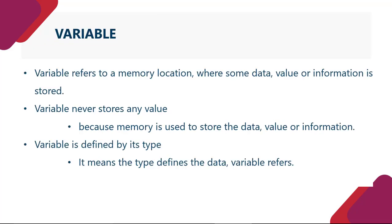Variable - variable kya hota hai? Variable refers to a memory location where some data, value or information is stored. Variable never stores any value. Some students in their definition say that variable is used to store the data - yeh galat hai, because memory is used to store the data, value or information. Variable is defined by its type. It means the type defines the data variable refers. Agar koi bhi variable hai, woh kisi bhi data ko agar refer kar raha hai, to joh type hai, woh define karega us type ki data ko.